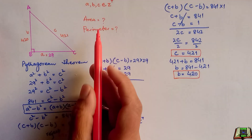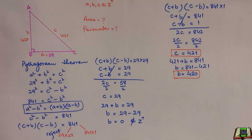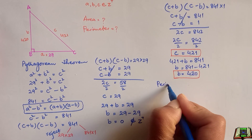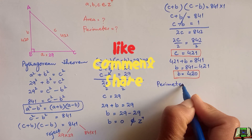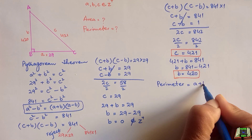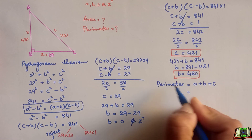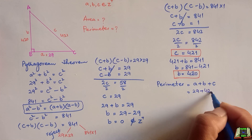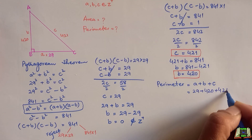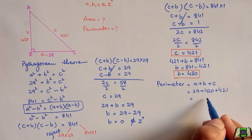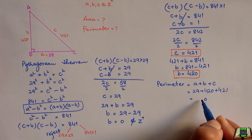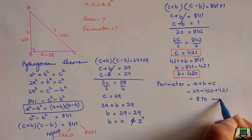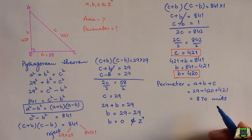Now that we have all three sides of the triangle, we can find the perimeter and area. The perimeter of a right angle triangle is the sum of all three sides: A + B + C. We know A = 29, B = 420, and C = 421. Adding these three sides gives a perimeter of 870 units.